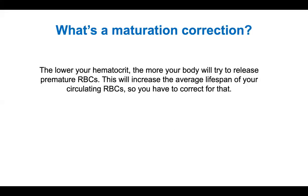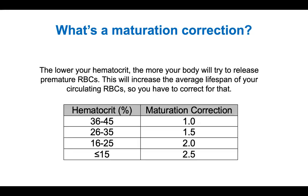What is a maturation correction? The lower your hematocrit, the more your body will try to release premature RBCs — that's a normal thing. What that does is increase the average lifespan of your circulating RBCs, so this is a correction factor for that. There are many tables out there; the lower your hematocrit, the higher your maturation correction.